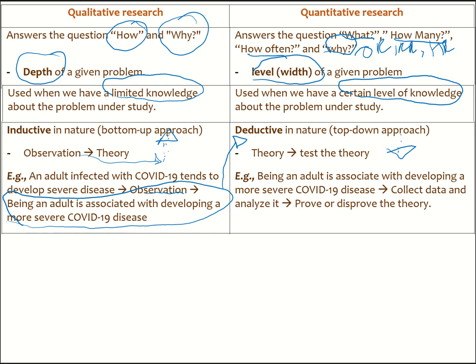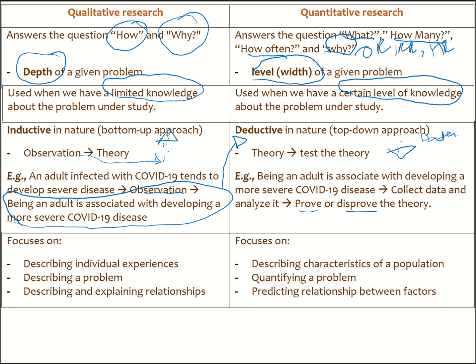Using the theory developed from qualitative research, we can collect data on an adequate representative number of participants and then try to either prove or disprove the theory. So qualitative research follows an inductive approach and quantitative research follows a deductive approach.